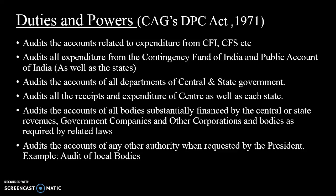For the duties and powers of the CAG, an Act was enacted by Parliament in 1971 and amended in 1976 — the Duties, Powers and Conditions of Service Act 1971. The CAG audits accounts relating to expenditure from the Consolidated Fund of India (CFI) and Consolidated Fund of each state. It also audits expenditure from the Contingency Fund of India, Contingency Fund of states, and the Public Account of India. It audits the accounts of all departments of central and state governments, and receipts and expenditure of the center and each state.